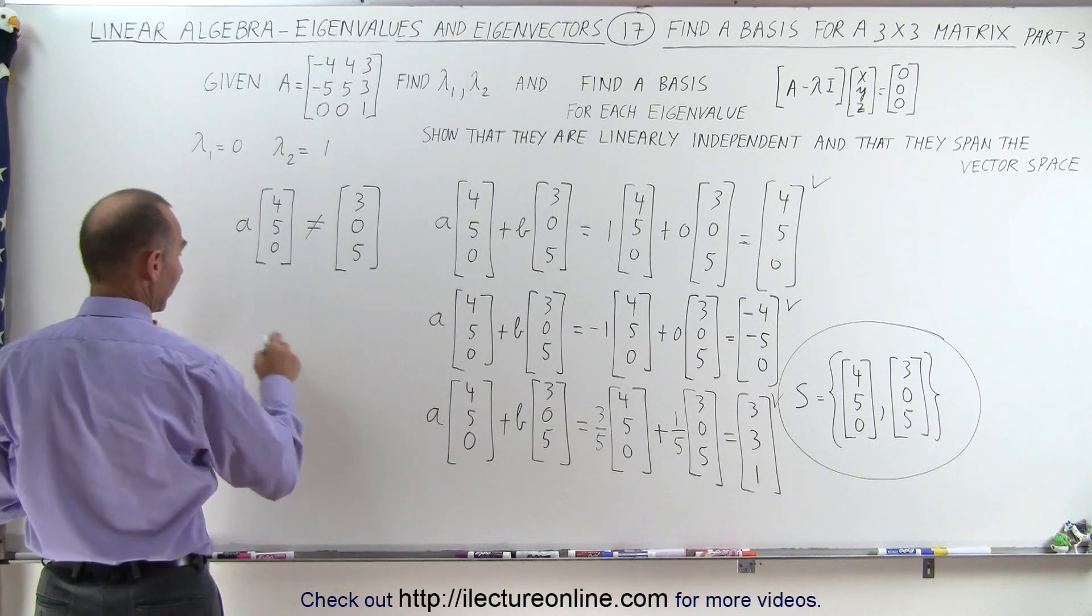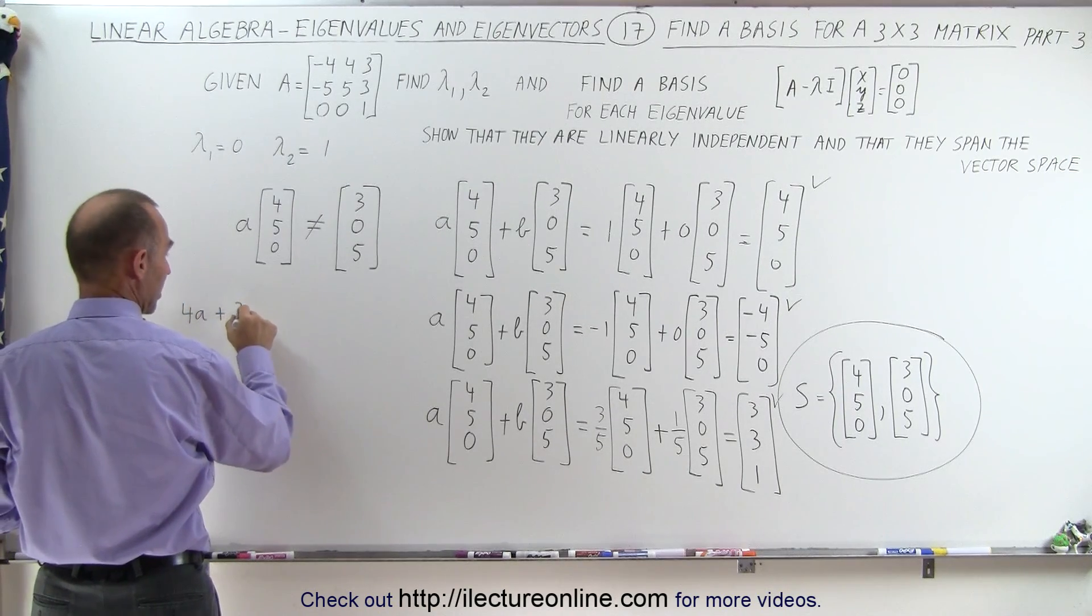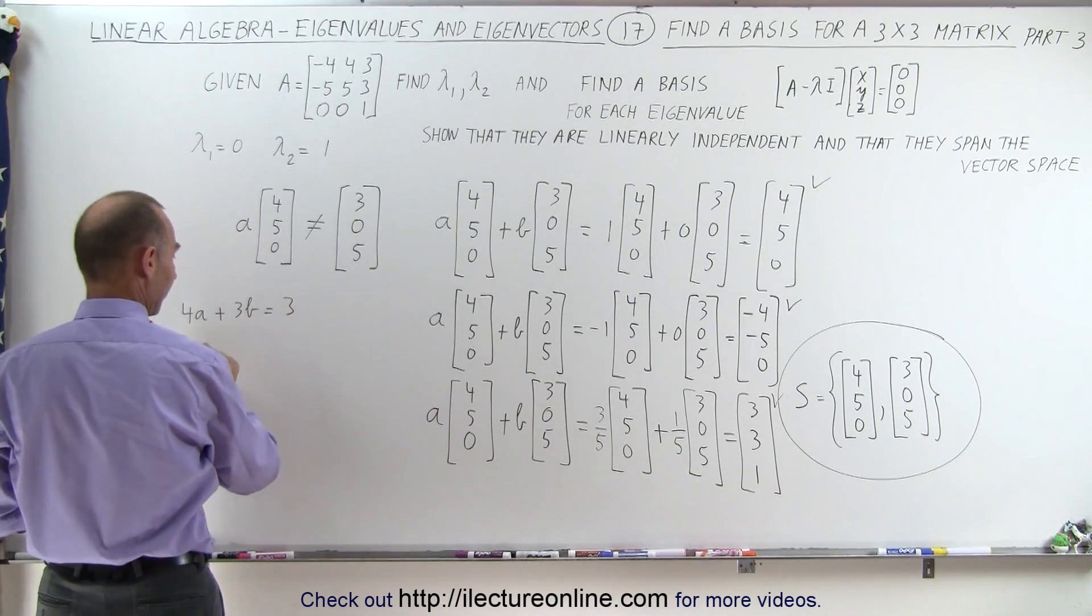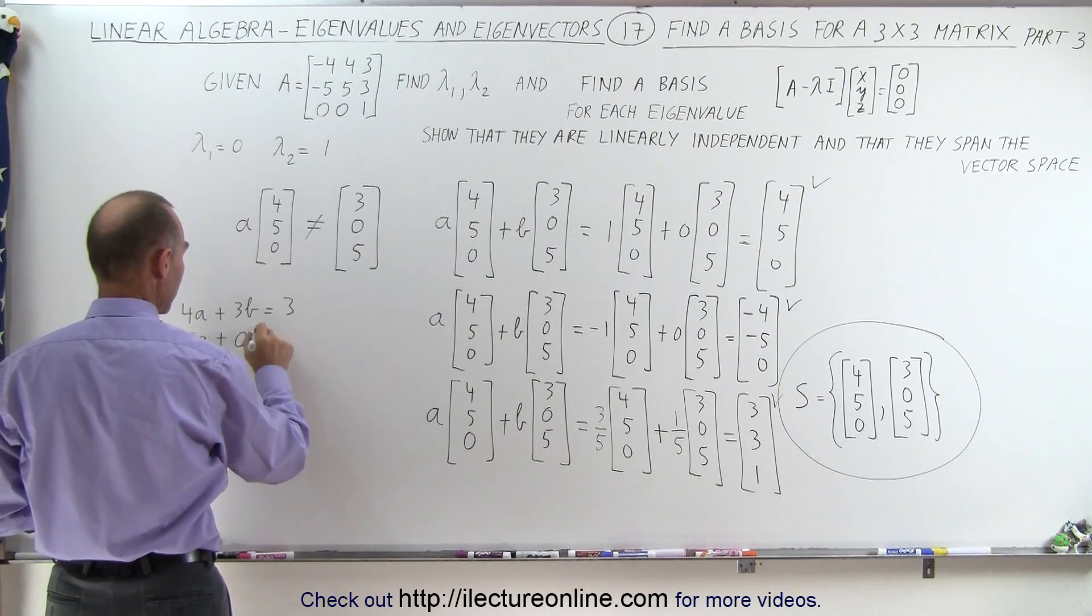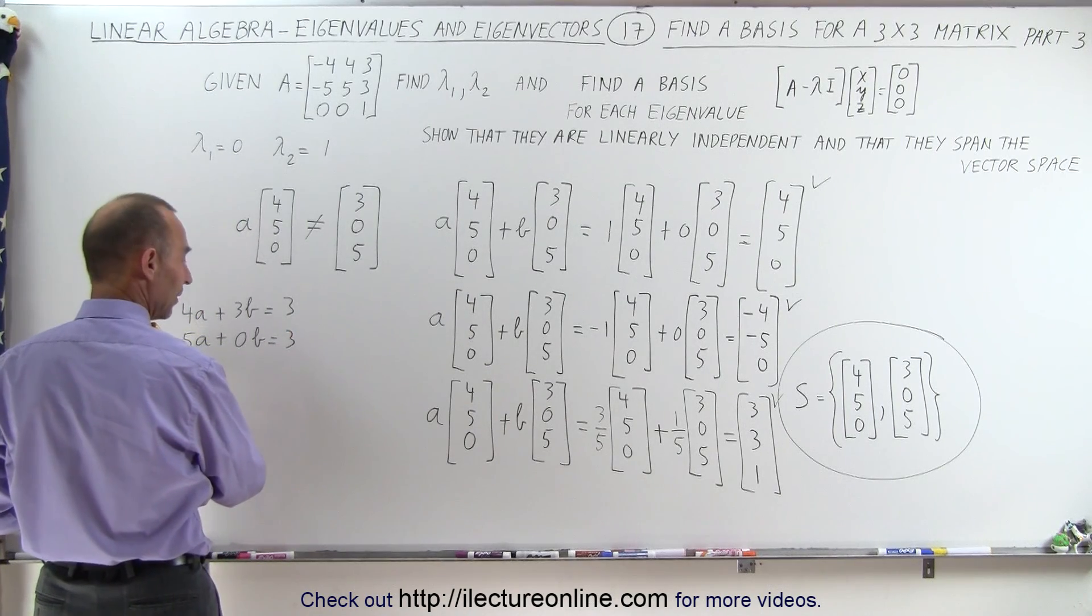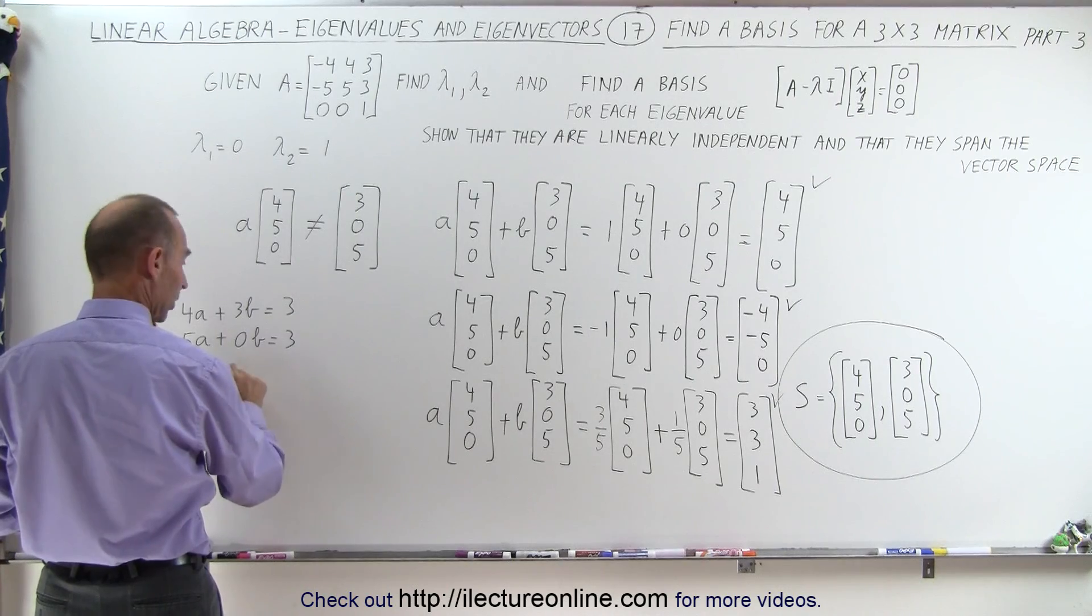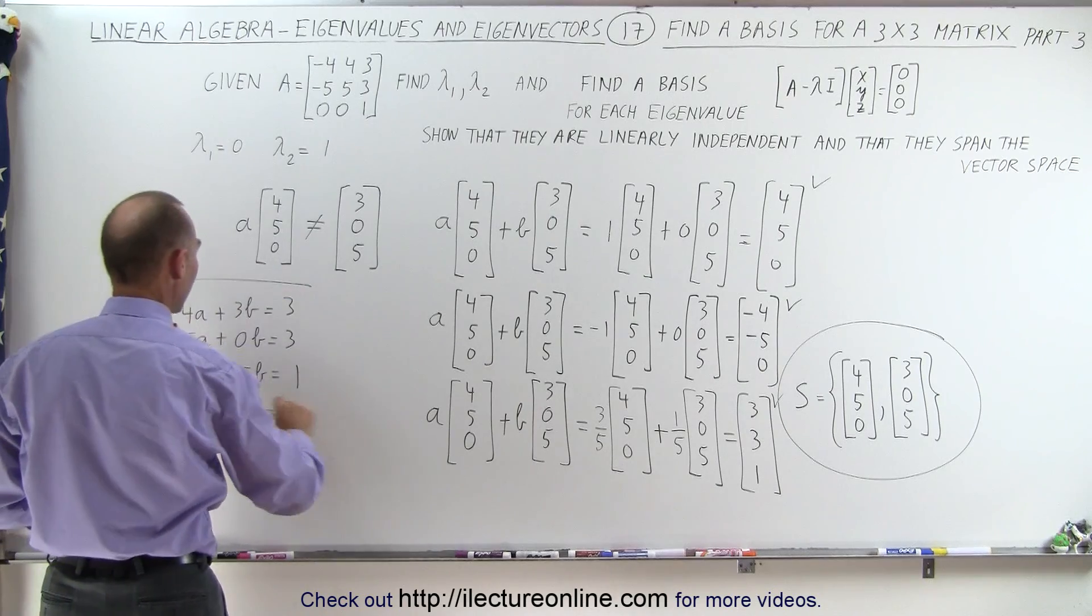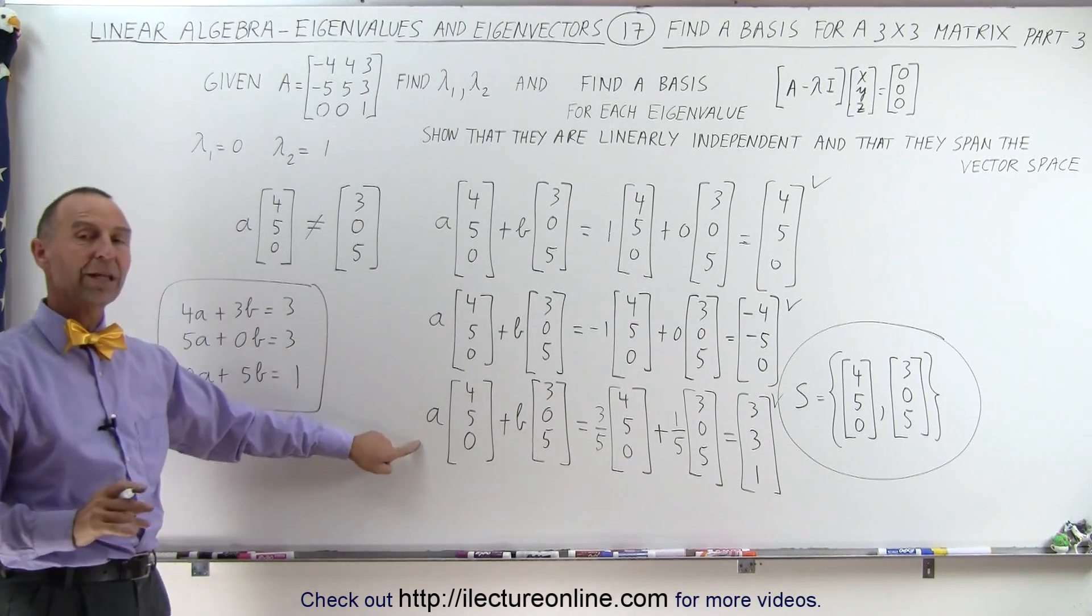You could simply say that 4a plus 3b is equal to 3. Then we have 5a plus 0b is equal to 3. And then we have 0a plus 5b is equal to 1. So you could do the same thing by solving these equations simultaneously. You obtain the same thing.